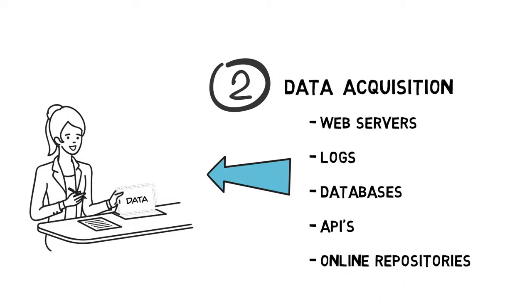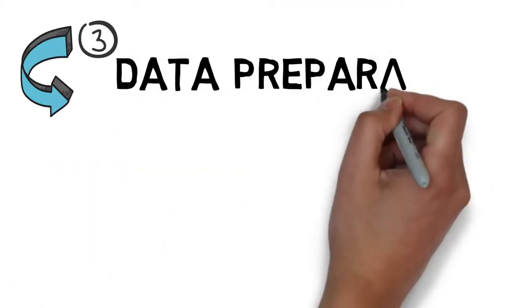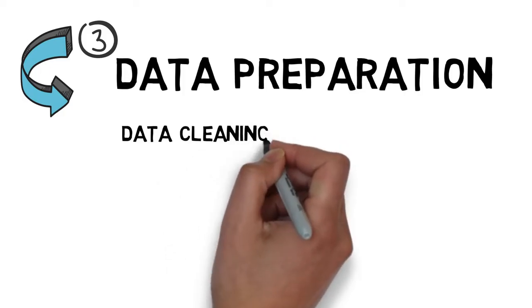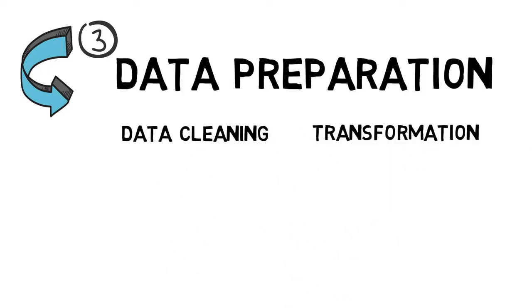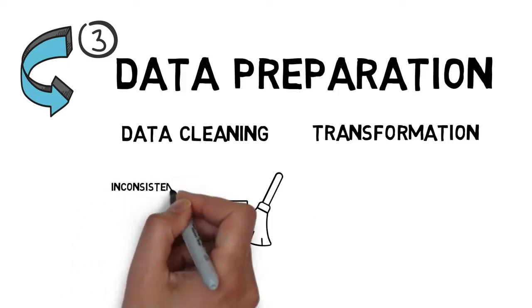After the data is gathered comes data preparation. This step involves data cleaning and data transformation. Data cleaning is the most time-consuming process as it involves handling many complex scenarios. Here Emma deals with inconsistent data types, misspelled attributes, missing values, duplicate values, and whatnot.